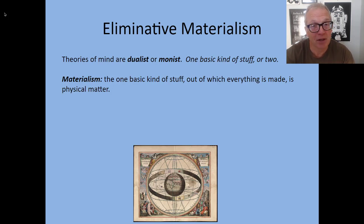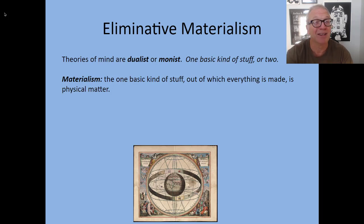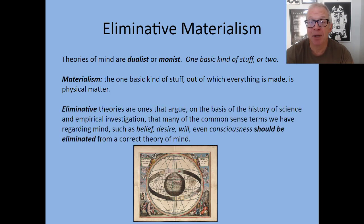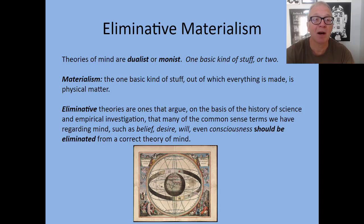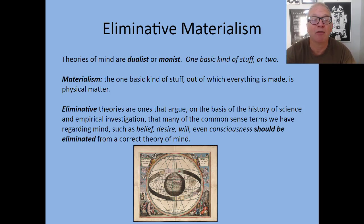We're going to look at Eliminative Materialism — a particular species of materialism that says a lot of the concepts and entities that we postulate exist in the world actually need to be eliminated. Eliminative theories — sometimes I'll just refer to these as EM theorists — argue on the basis of the history of science and empirical investigation that many of the common sense terms we have regarding mind, such as belief, desire, will, and even consciousness itself, should be eliminated from a correct theory of mind.